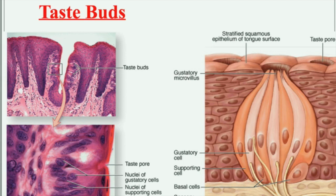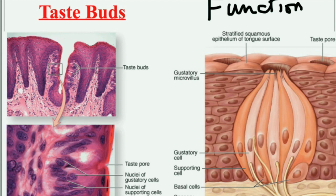Regarding the function of each cell type: the supporting cell is responsible for the secretion of amorphous glycoprotein material that surrounds the microvilli in the taste bud for protection. The gustatory cell is responsible for the taste sensation. The basal cell acts as a stem cell for the renewal of both the taste cells and supporting cells.